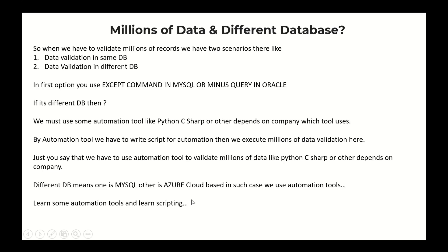Different DB means one is MySQL and the other is Azure or AWS cloud-based — in such cases, we must use automation tools. Learn some automation tools and scripting. These are very important for ETL testers. Learn any one language — Python or others, like Java or Selenium. If you know scripting, it will be much easier to validate data in different databases. For the same DB, use MINUS query in Oracle or EXCEPT in MySQL. For different DBs, automation tools are compulsory.